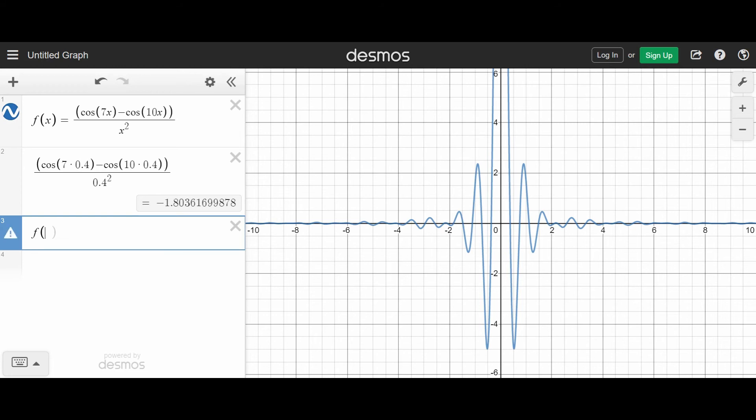Desmos makes a lot of these things much easier. Because I've already called this original function f, I can use that in another line here. So in line three, I can just say f of 0.4 and I get the exact same value that I got when I took all the time to plug it into the function itself. So Desmos actually does a lot of that work for us.